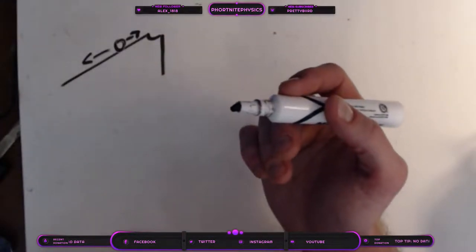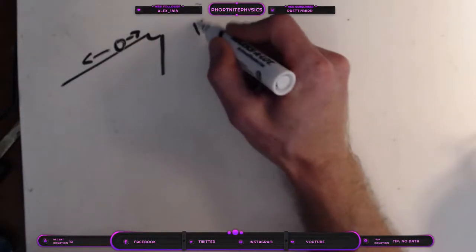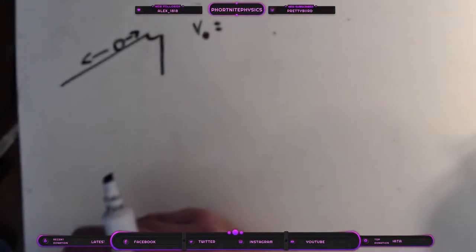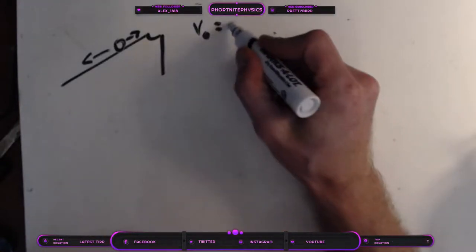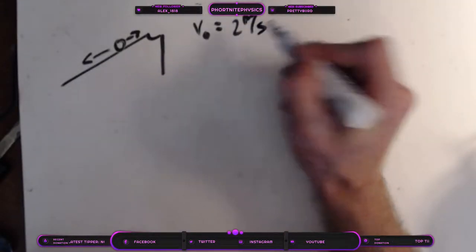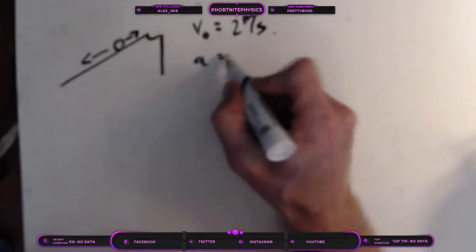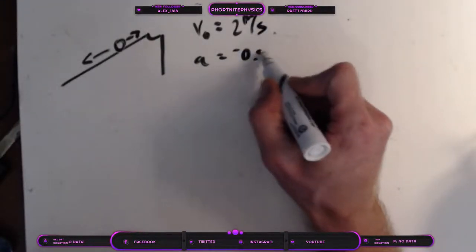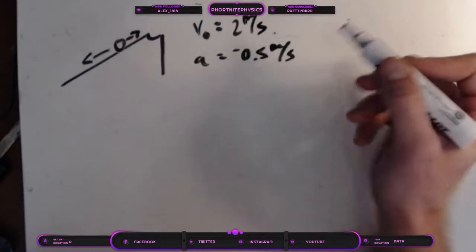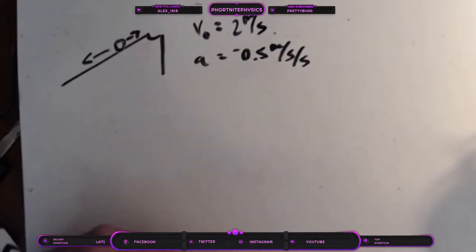Now if it starts with a velocity of, so initial velocity V₀ of 2 meters per second. And accelerates, so acceleration at a constant rate of negative 0.5 meters per second per second.